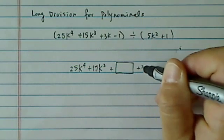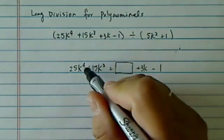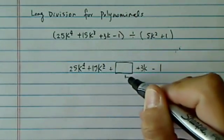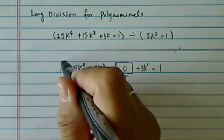First thing you want to do is make sure you have spots for all the missing terms. So for 4, 3, you're missing a 2k squared term, which we'll put a 0 here, and k to the 1, and k to the 0.